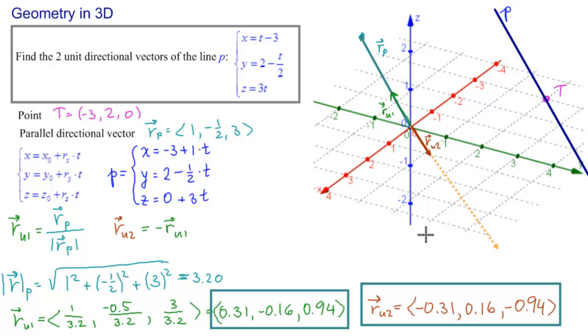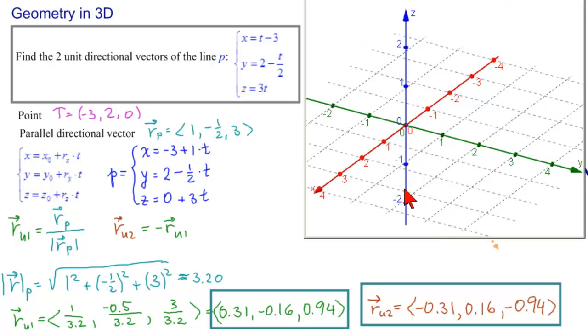Let's see this with our dynamic software. It's interesting that in order to draw the line in this particular piece of dynamic 3D software, I actually had to find a point and a directional vector. So, here's the point minus 3, 2, 0. Here is the directional vector. And then I could define the line.